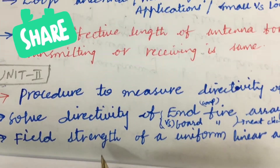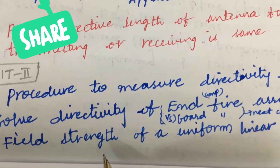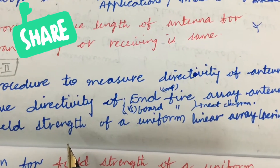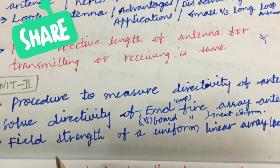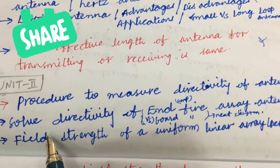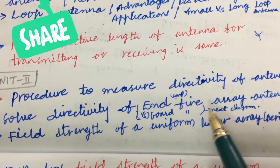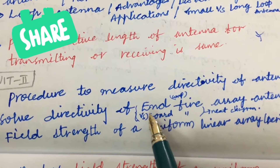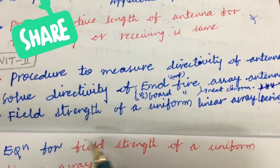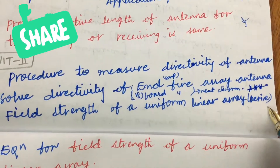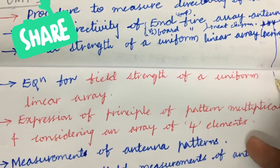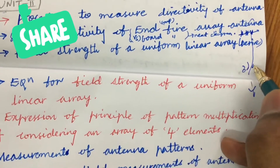Now let us look at Unit 2, which is all about theory. I have uploaded a video on how to take a theory paper under JNTUH to score better marks — please do watch it. Work out the procedure to measure directivity of an antenna, solve directivity of an end-fire array antenna, and compare end-fire versus broadside with a neat sketch — this may be a gunshot question. Also derive the field strength of a uniform linear array. From these we can expect question 3A and 3B.